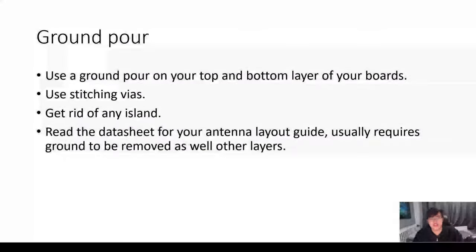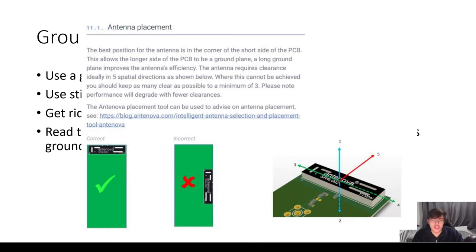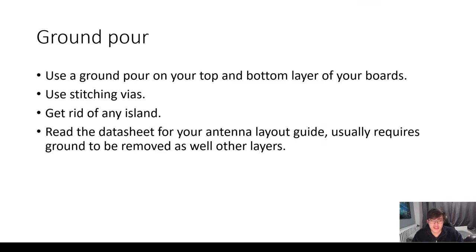Read the data sheet for your antenna layout guide. Usually requires ground to be moved as well as other layers. So in your antenna data sheet there should be a guide on whether the dimensions of certain things needs to be required and I'll chuck an image up on screen now. You can see on this particular data sheet it requires certain things to be cut out and have specific dimensions to them as well for the whole thing. The ground underneath and all other layers to be completely removed - you need to follow this. Do not just chuck them as how you want and then think you'll be okay. Please do read this, this is very very important. And it's kind of an odd thing when you think...